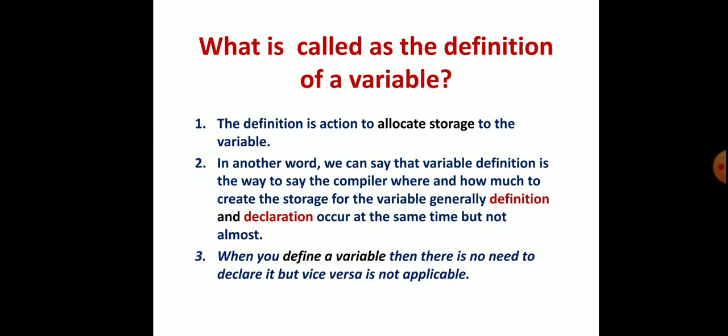When you define a variable, then there is no need to declare it, but vice versa it is not applicable. For example, if you want to define a variable, you don't want to declare it in advance. Even in a C program, as you know Embedded C is just a derivative of the C program.